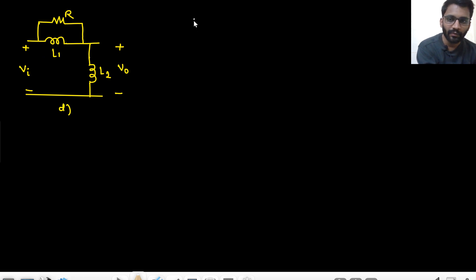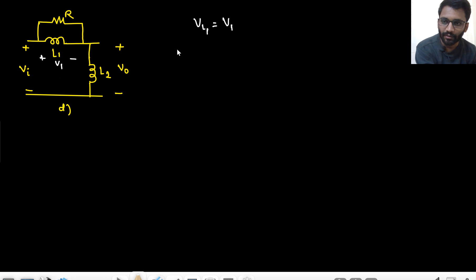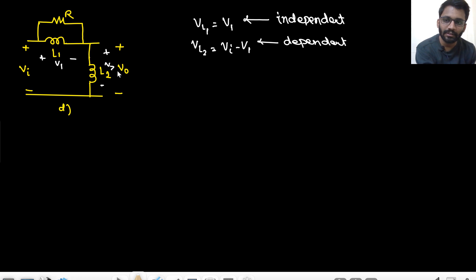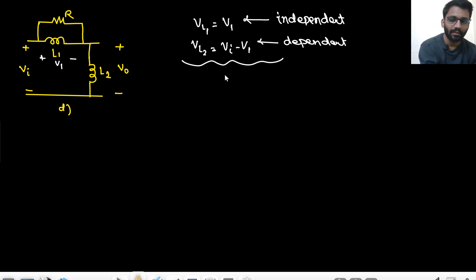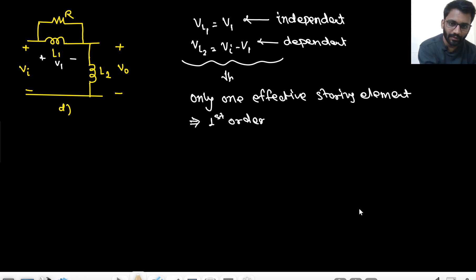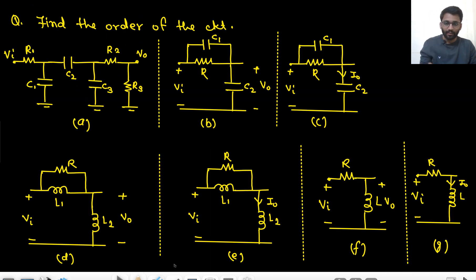Now let's go to the fourth circuit, which has inductors. For VL1, give it an independent voltage V1. When you give V1 to VL1, what would VL2 be? That would be VIN minus V1. So one is independent and the other is dependent. You could give V2 to the other and VL1 = VIN minus V2. Either way, there is only one effective storing element, so this is a first-order circuit.